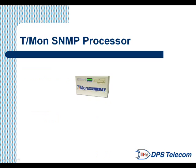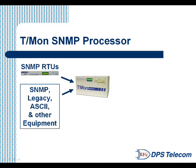Now let's look at what Tmon does. Tmon accepts trap messages from the same SNMP RTUs and the same SNMP equipment, but it also accepts incoming alarms from legacy equipment, equipment with ASCII text output, such as a telecom switch, and many other types of equipment.